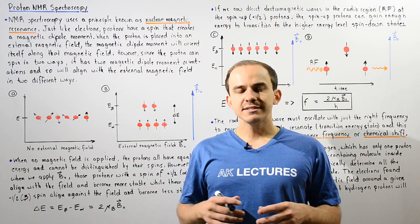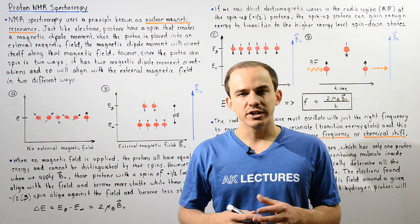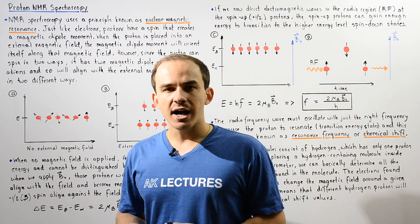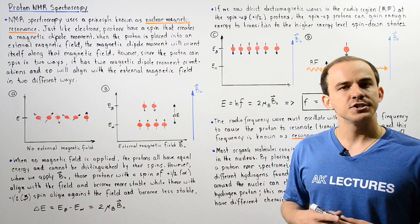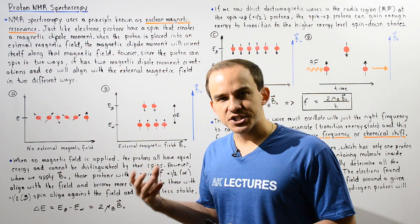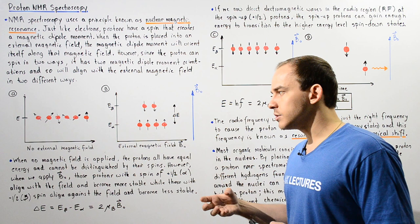In the next series of lectures, we're going to discuss a technique used in organic chemistry known as proton NMR spectroscopy. Proton NMR spectroscopy uses a principle from nuclear physics known as nuclear magnetic resonance. Before we understand what proton NMR spectroscopy is, we first have to understand what nuclear magnetic resonance is.